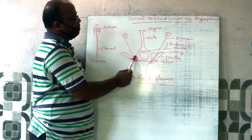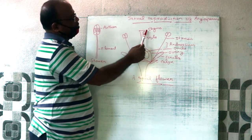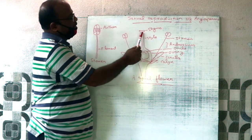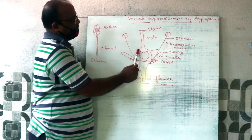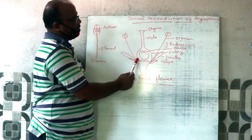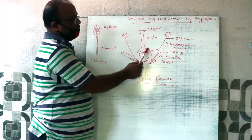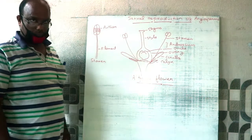Structurally, the Gynoeceum has three different parts. The upper part is known as the Stigma, the middle part is called the Style, and the basal swollen part is known as the Ovary.